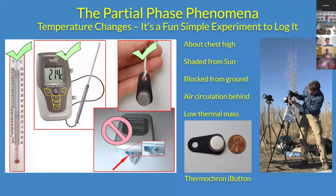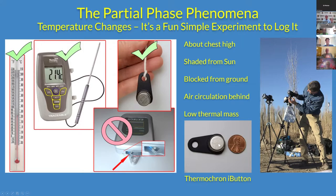It's a fun thing to do to take temperature readings during the partial phases. Students can do it with a scientific grade liquid thermometer, an electronic thermometer, or a data logger, as long as it's based on a probe. I've done it in two eclipses with a device called the Thermocron I-button, which you program with a computer to turn on during eclipse time, take data, and then shut off.